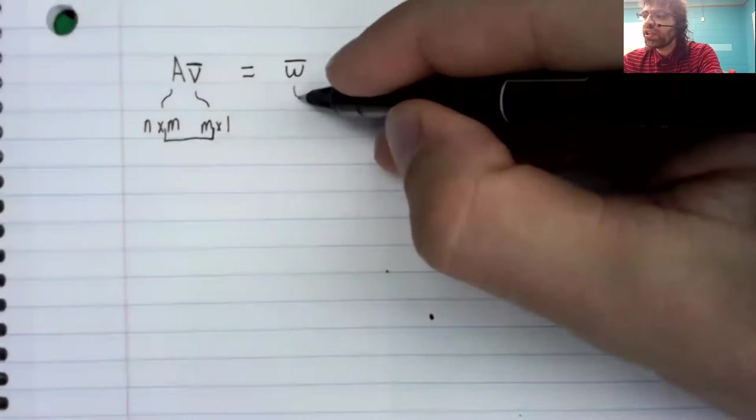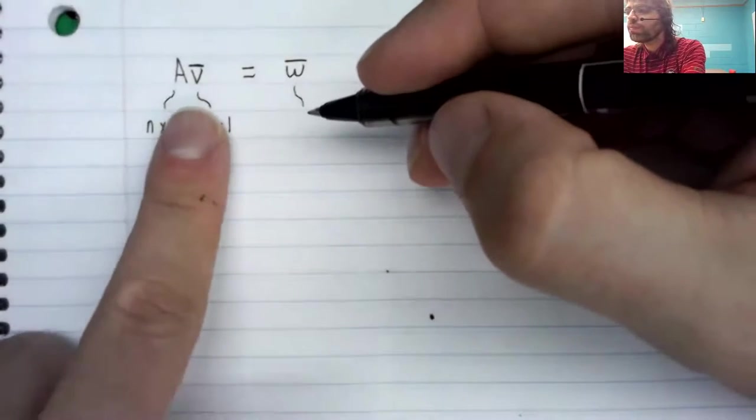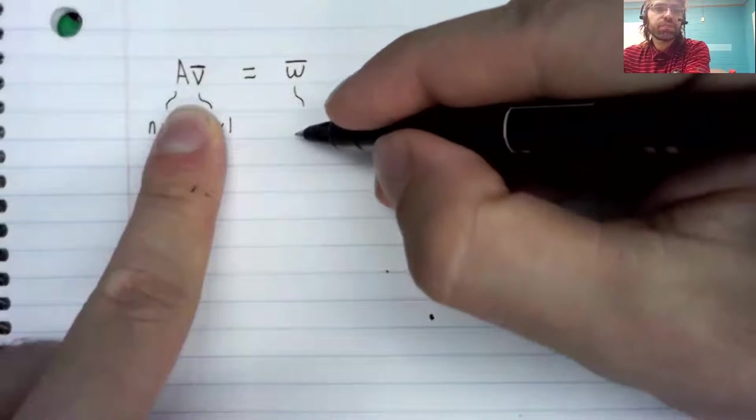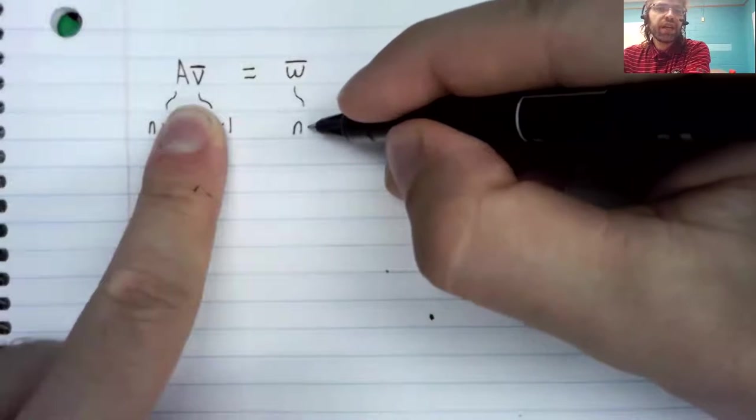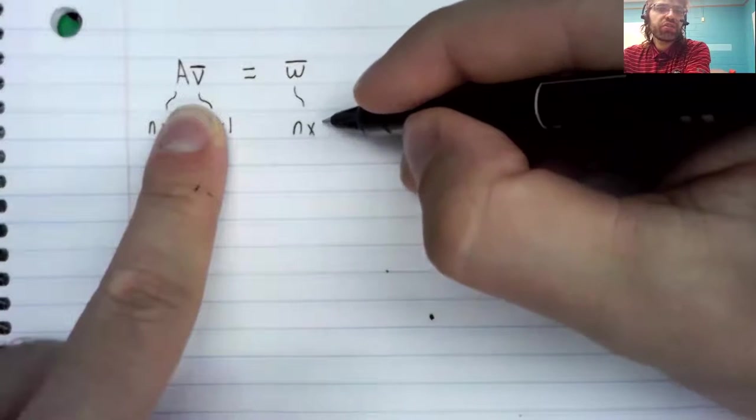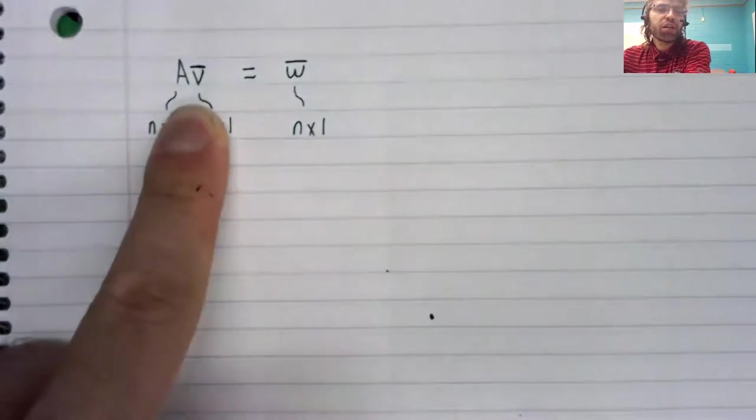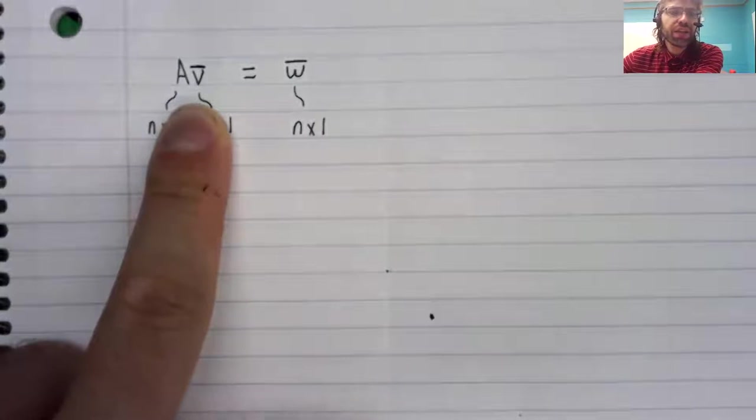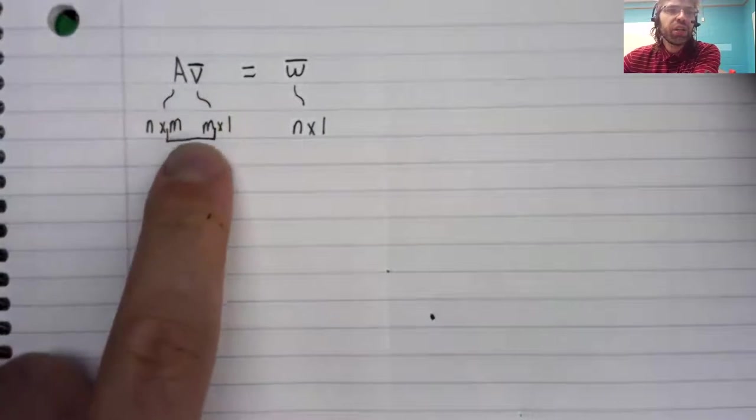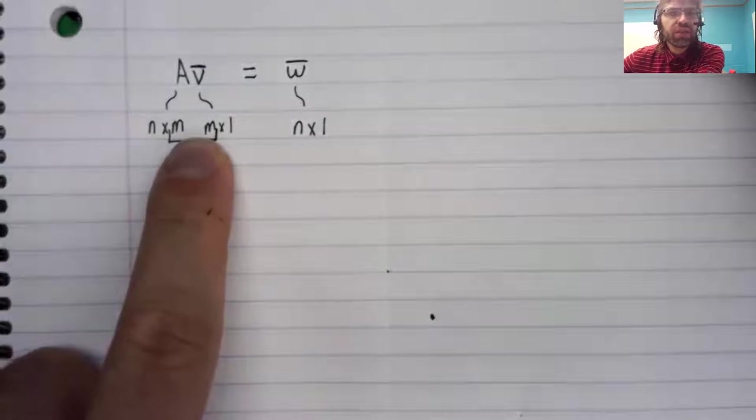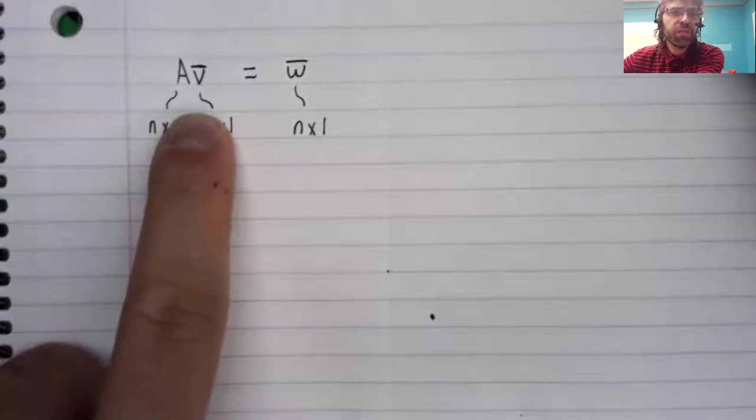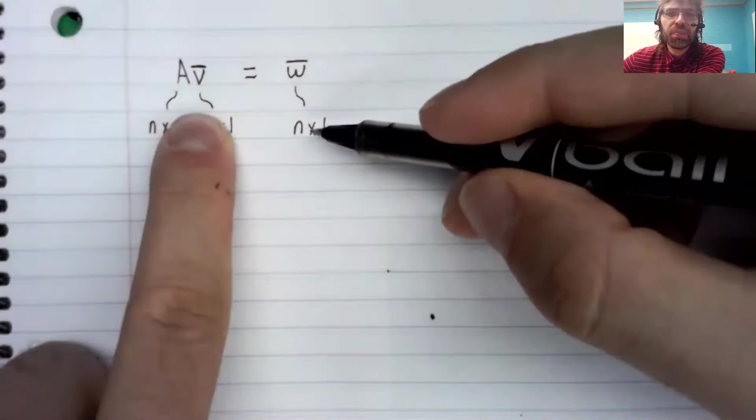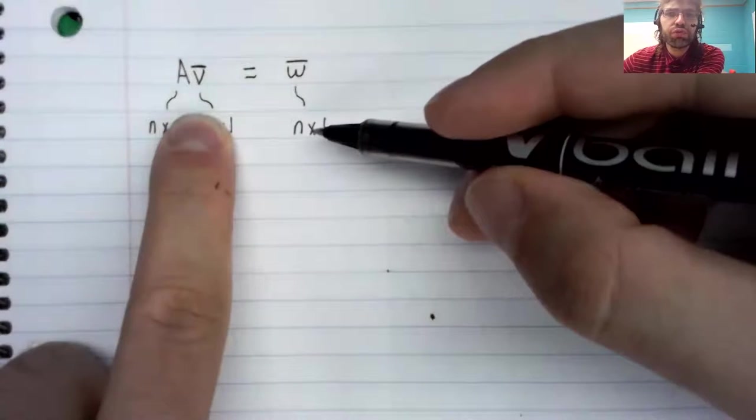And in particular, if we have these dimensions, this product is an n by one vector. So the inner dimensions have to match to do the multiplication. The outer dimensions give us the dimension of the product.